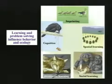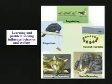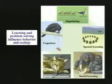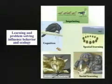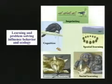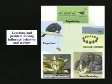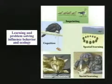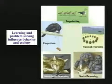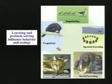We've just looked at imprinting and spatial learning. Moving through the types of learning, we can discuss social learning, associative learning, and cognitive behavior and cognitive learning. Let's look at an example of social learning from the primates — something we excel at. Primates also excel at this type of learning.